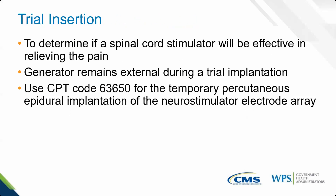The goal of the trial insertion is to determine whether a spinal cord stimulator will be effective in relieving that specific beneficiary's pain. A key difference between trial and permanent: the generator remains external during the trial, whereas for the permanent placement the generator is implanted internally. Trial insertions require a prior auth and use CPT code 63650.